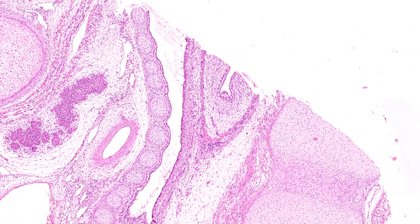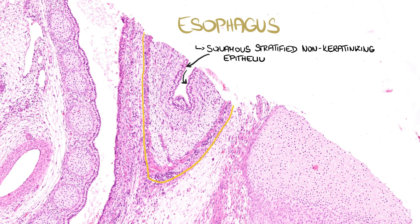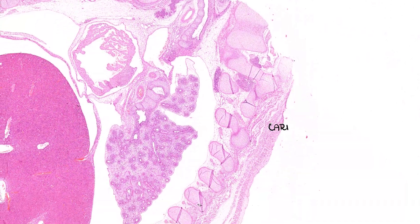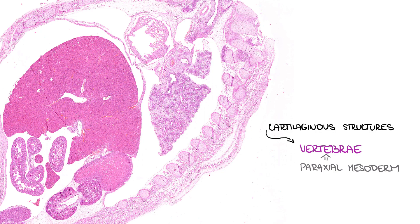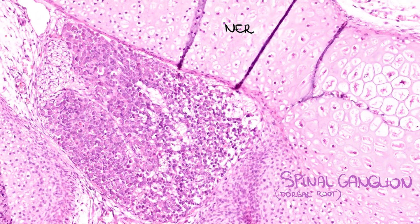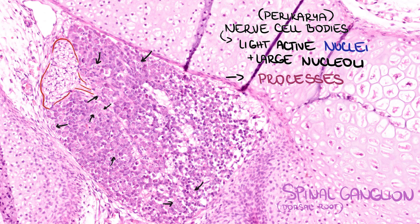Moving dorsally in our slide, behind the trachea we can see a small part of the esophagus with developing squamous stratified non-keratinizing epithelium, which is from endoderm of the primitive gut, and with a fine layer of muscle. Further behind, there are cartilaginous structures which are the future vertebrae. They are derived from paraxial mesoderm, which forms somites in the process of segmentation. There are spinal ganglia in proximity of the vertebrae. We can observe nerve cell bodies — perikarya — with their light active nuclei and large visible nucleoli, as well as processes exiting and entering the ganglion.